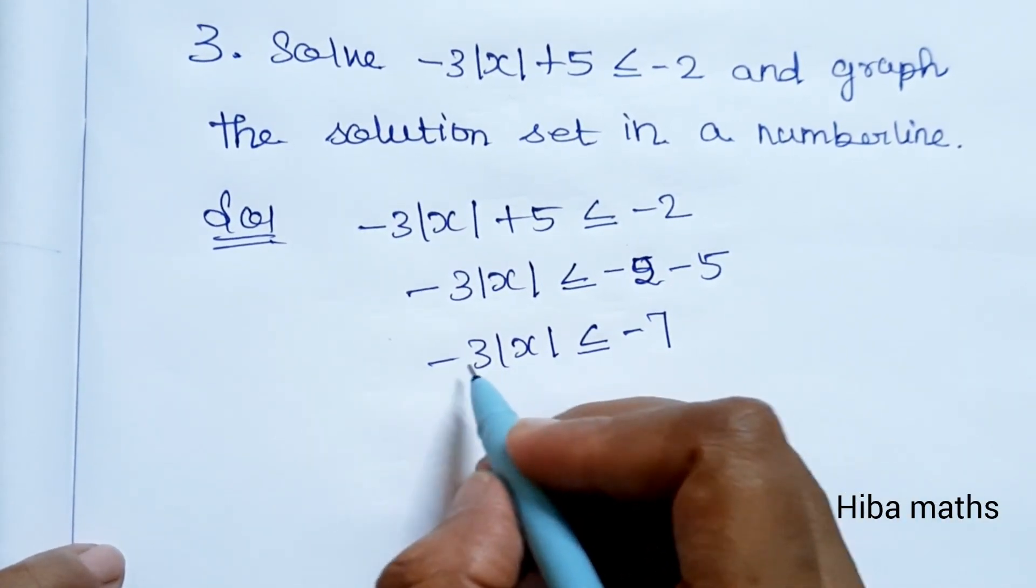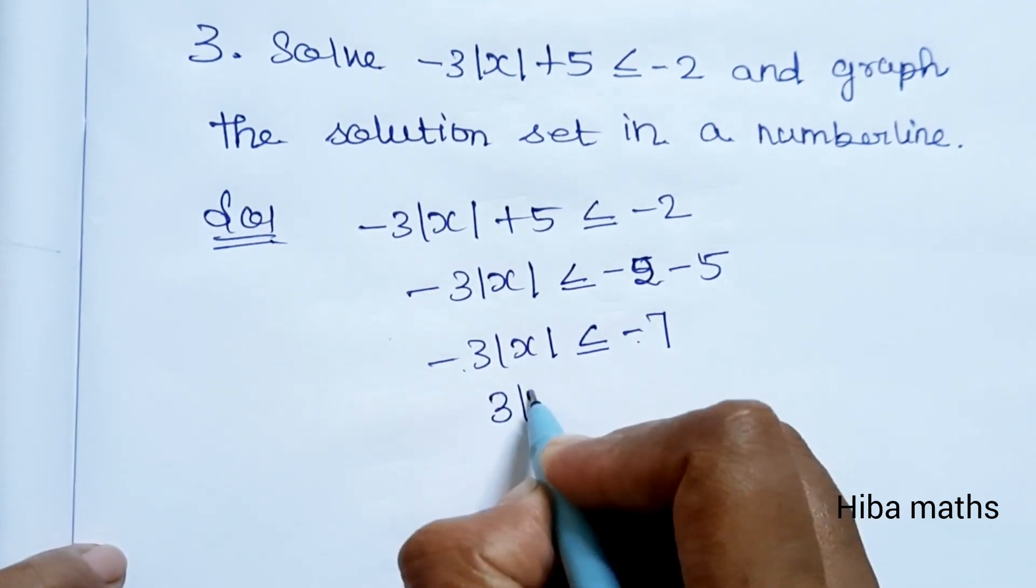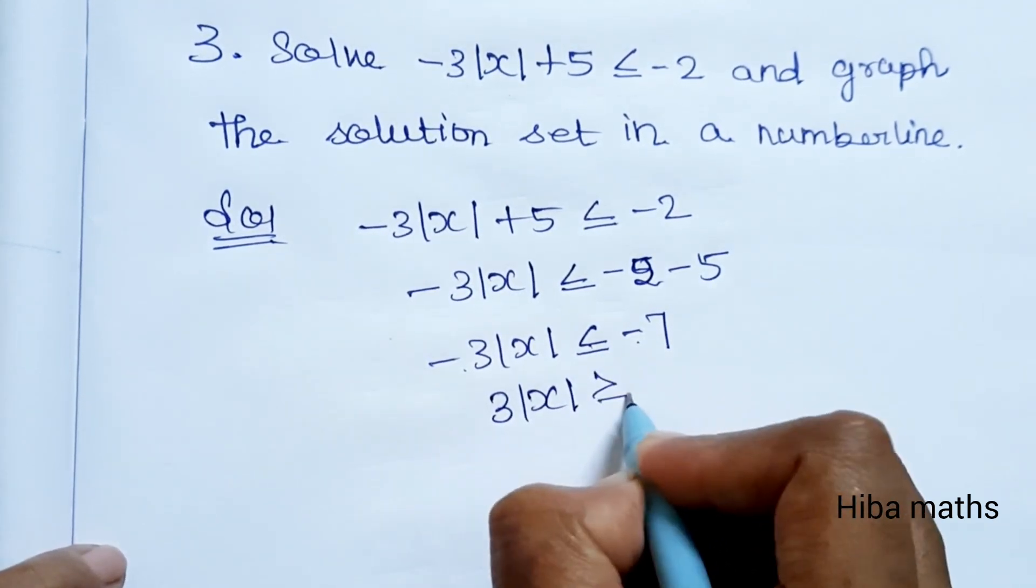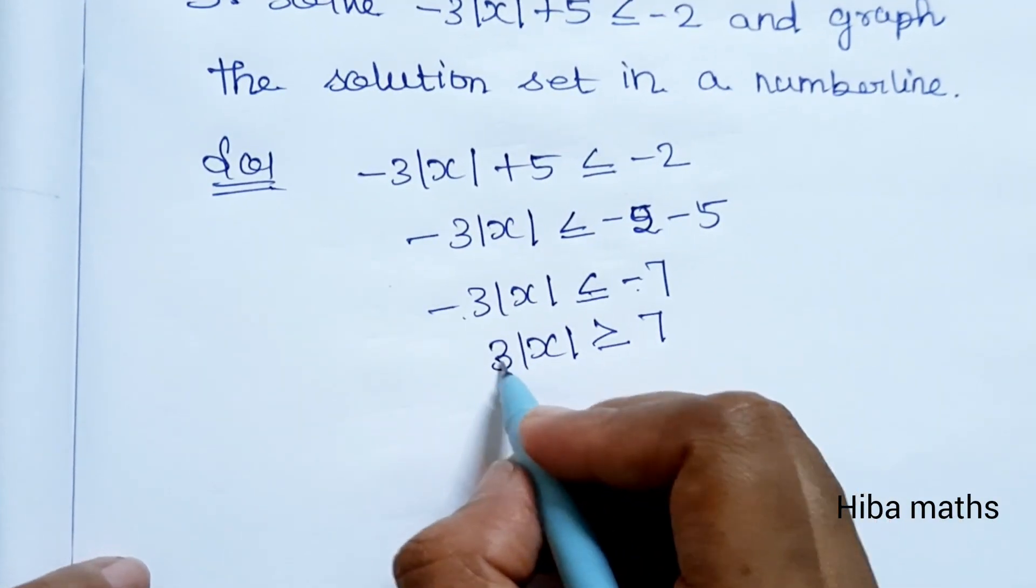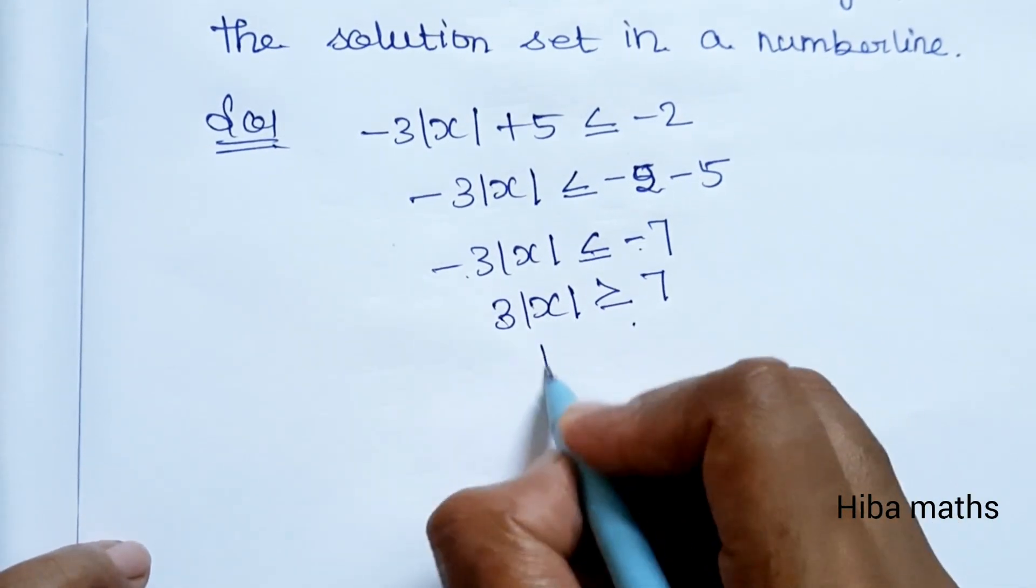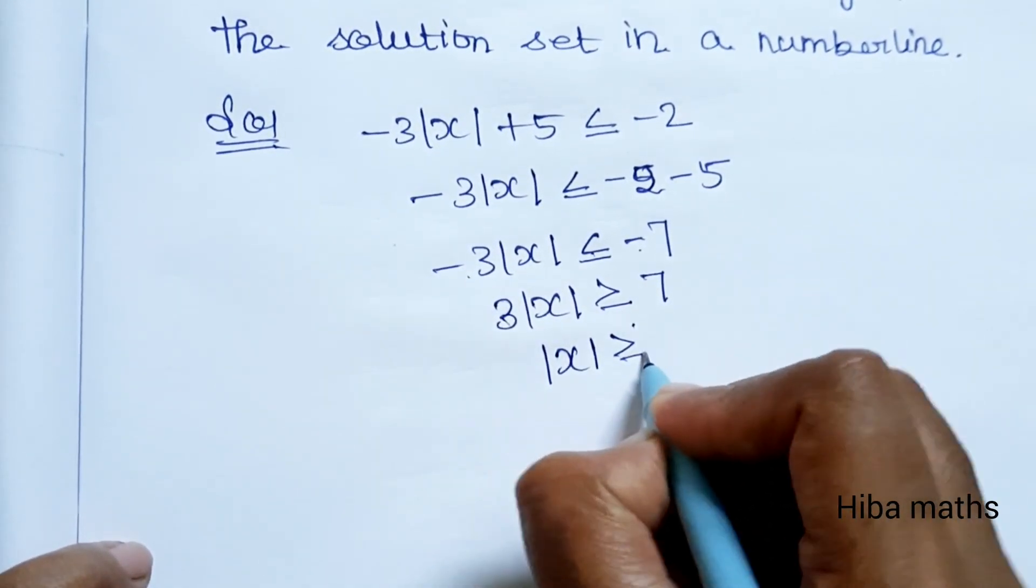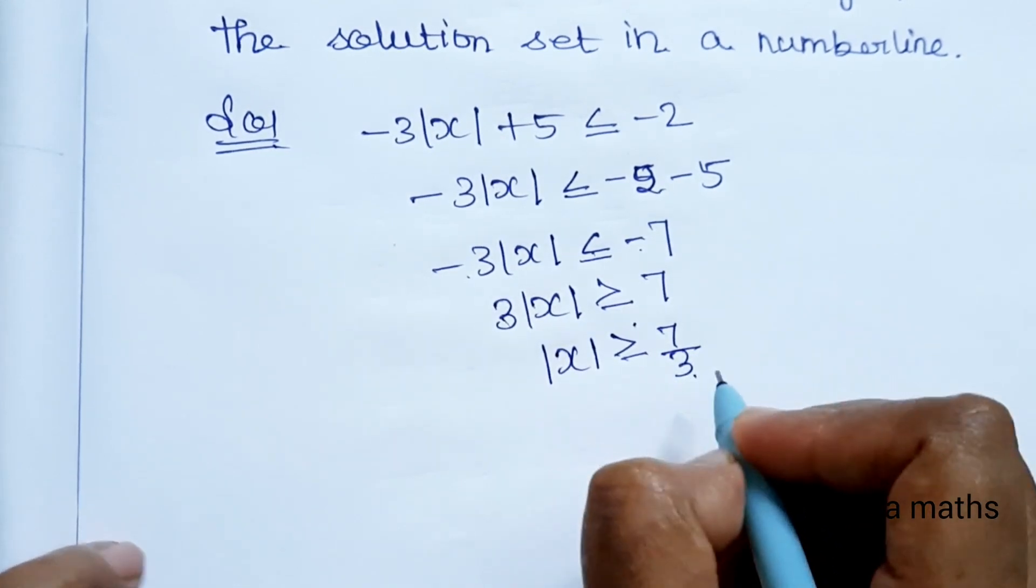Now we divide both sides by -3. When we divide by a negative, the inequality sign flips to greater than or equal to. So 3|x| ≥ 7. Therefore, |x| ≥ 7/3.